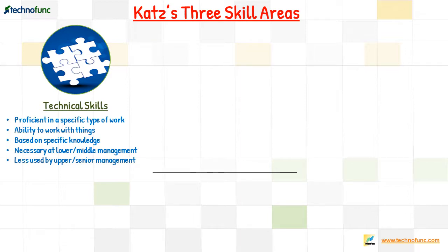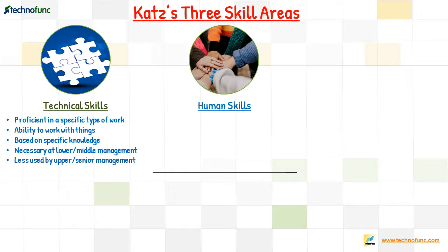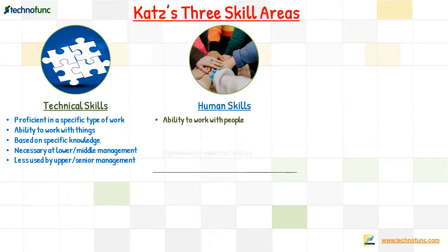Katz termed the second skill as human skills. Just as technical skills relate to the ability to work with things, human skills relate to the ability to work with people. Human skills are people skills that enable the leader to work effectively with subordinates, peers, and superiors.